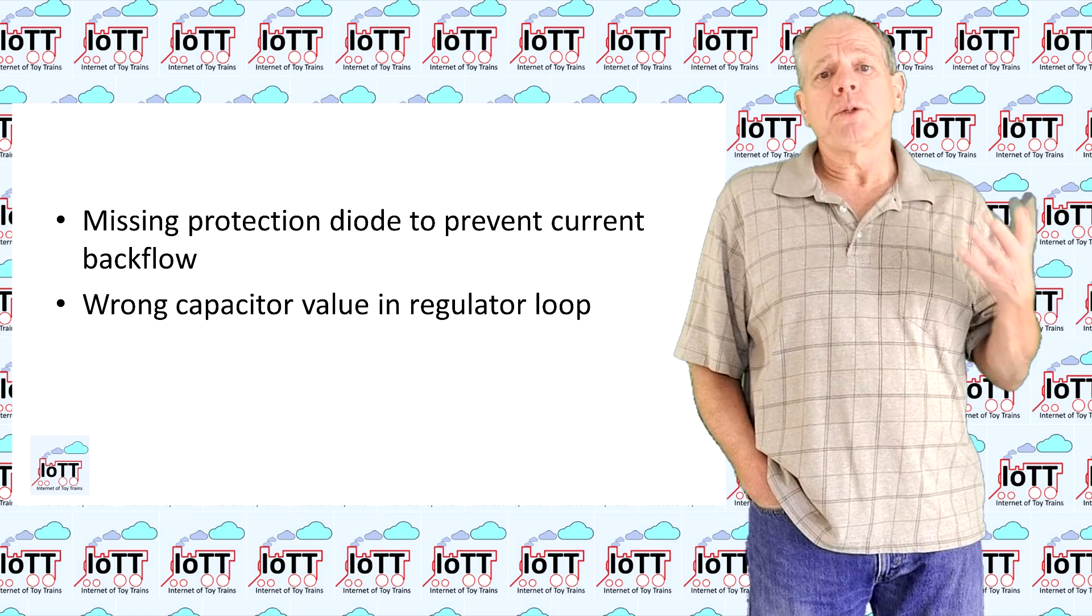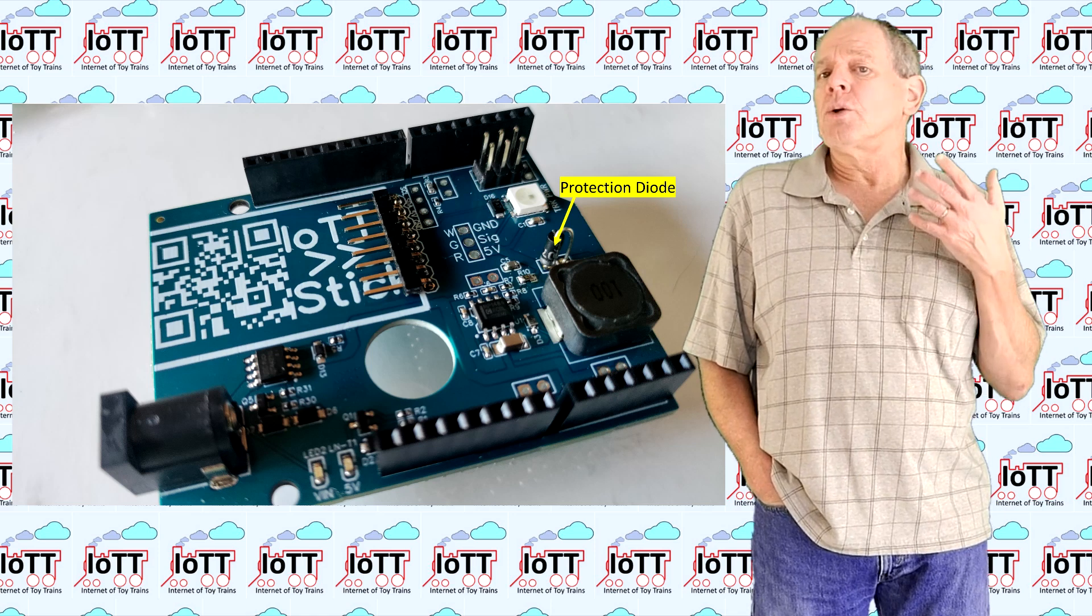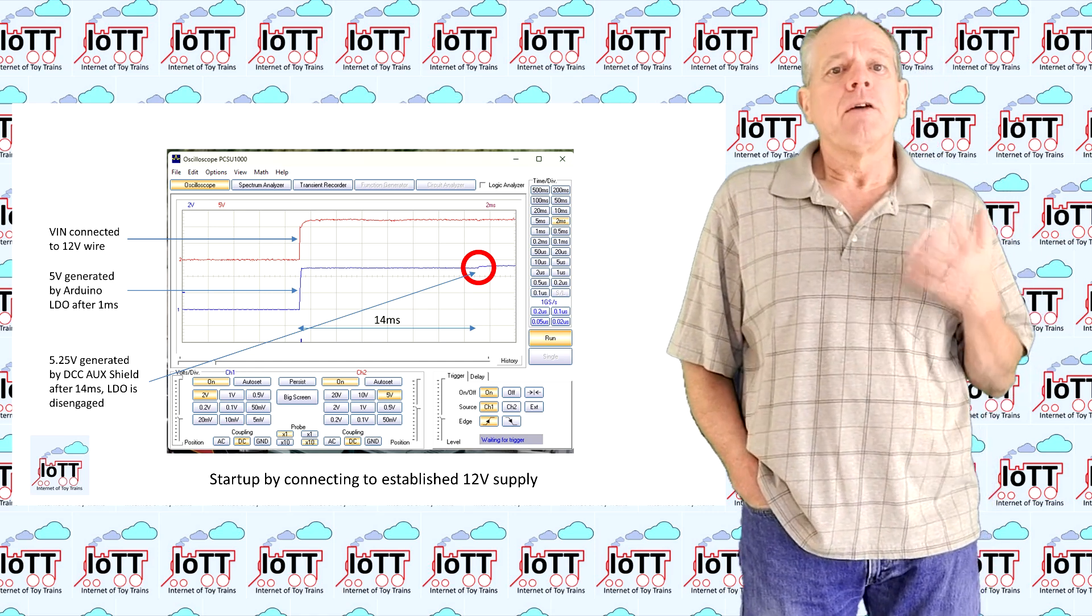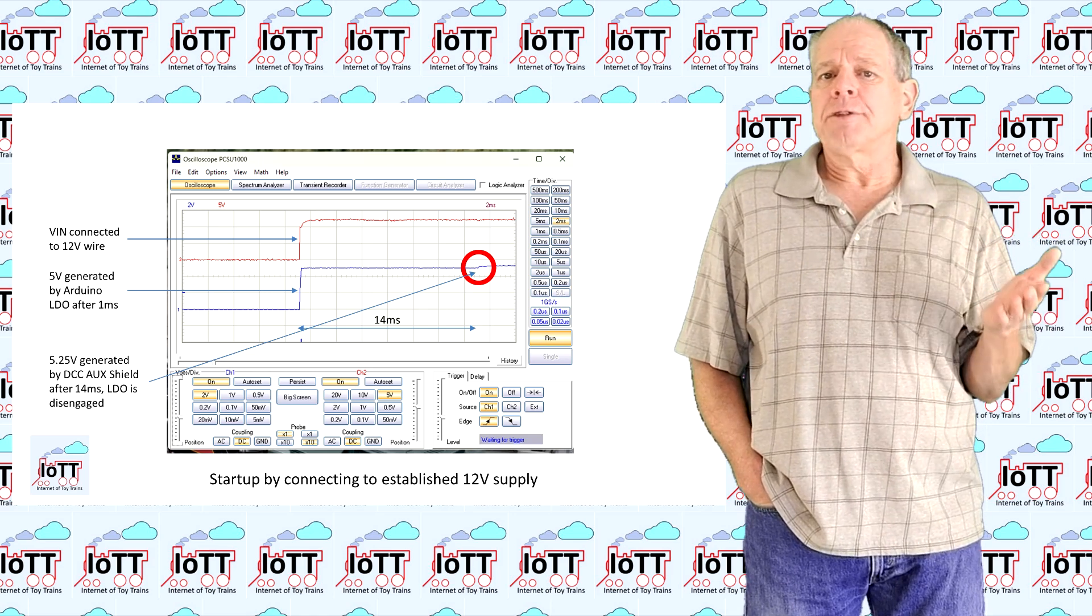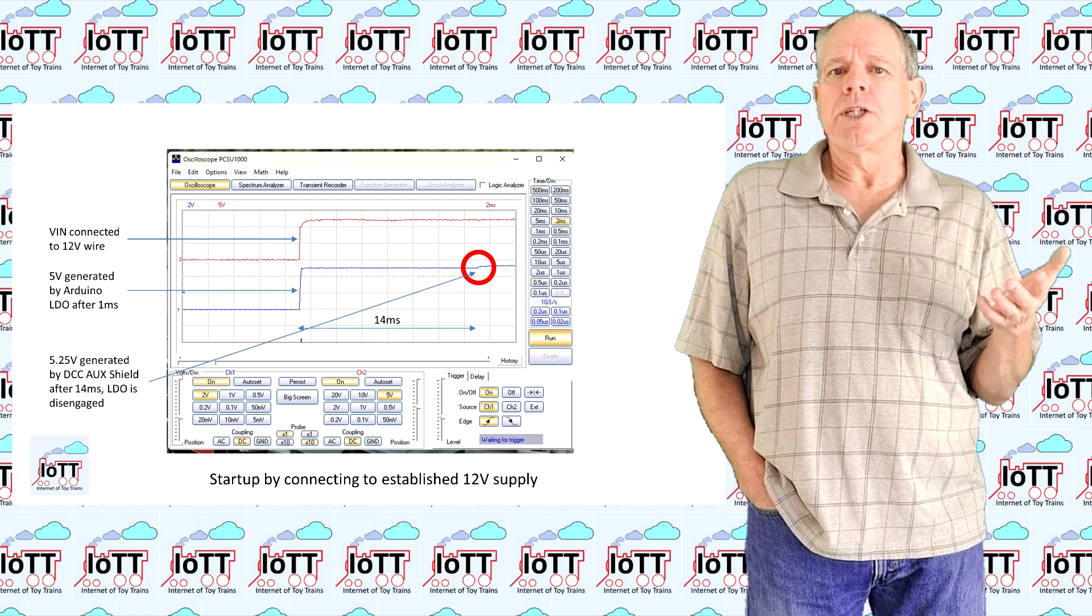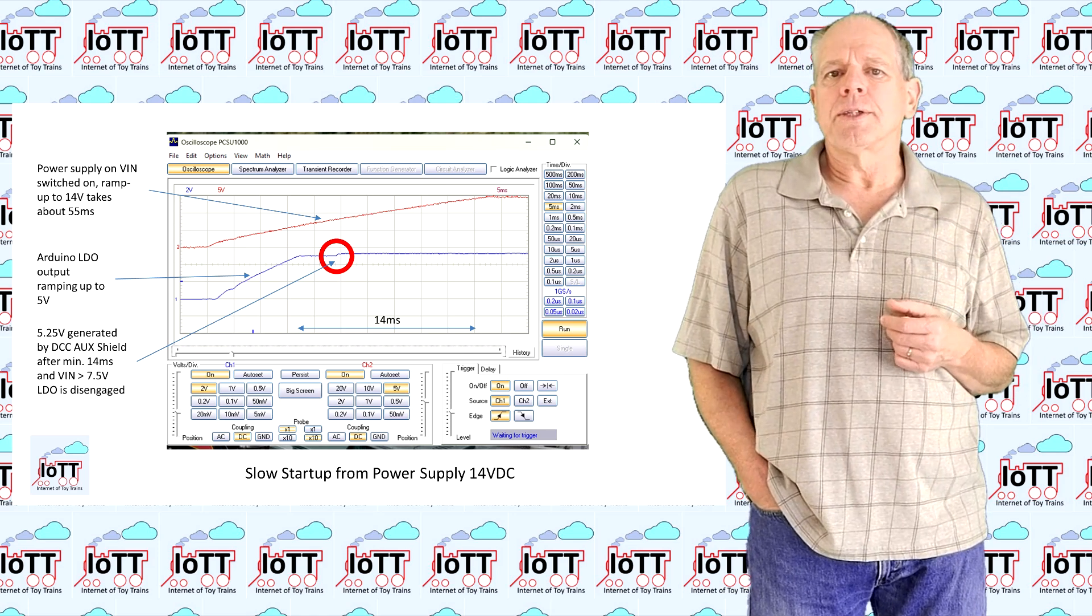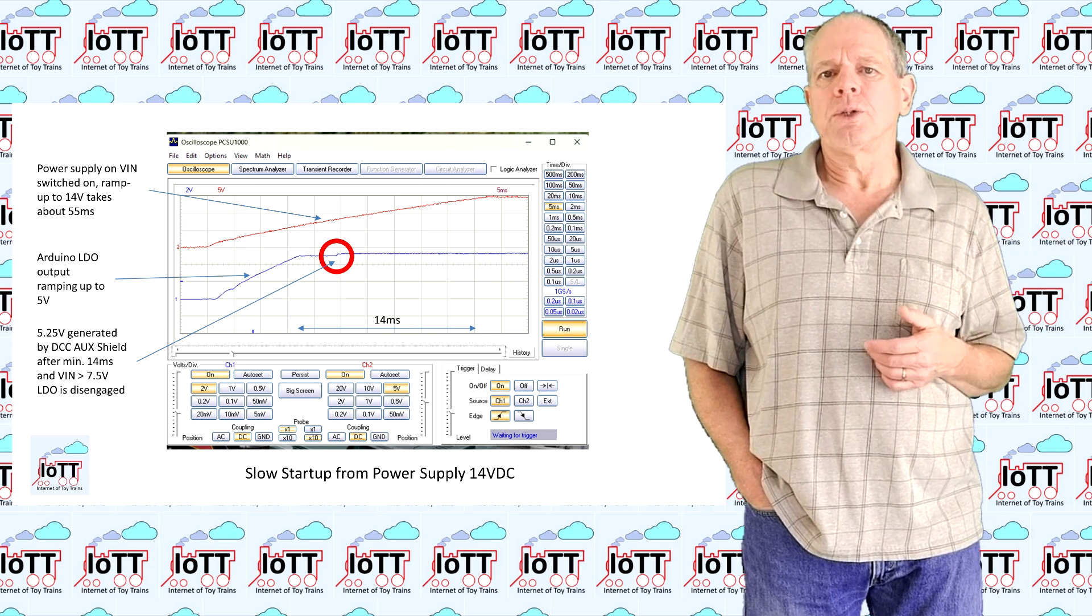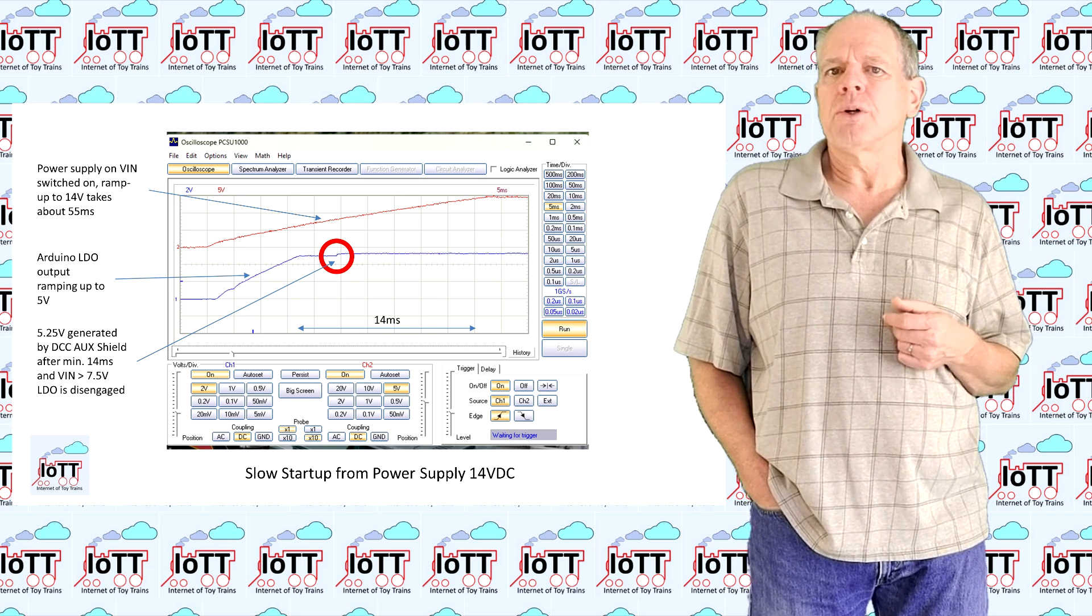Luckily, both problems are relatively easy to fix by some small board modifications and the oscilloscope finally showed a perfect start-up sequence. VIN is applied, the LDO provides 5V immediately and after the soft start phase of 15 milliseconds, we can see the voltage increase from 5 to 5.25V when the DC DC converter kicks in. That is the case when VIN reaches about 7.5V, so a safe range for the Arduino on-board regulator and no risk for overloading it.